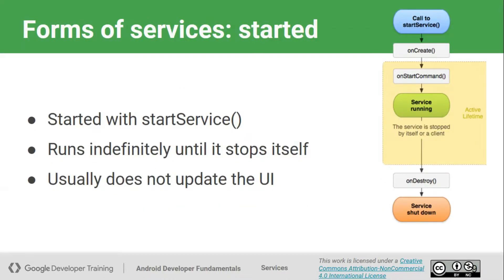This is the lifecycle of a normal service. When we click on start service, after starting the service, the onCreate method is called first, where we initialize all the objects we require. Then the onStartCommand method is called and the service starts running. When we click stop or call stopSelf, the service stops and onDestroy is called.